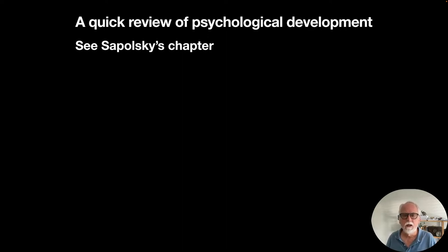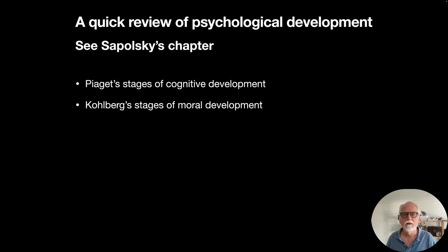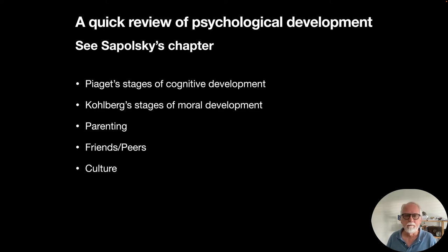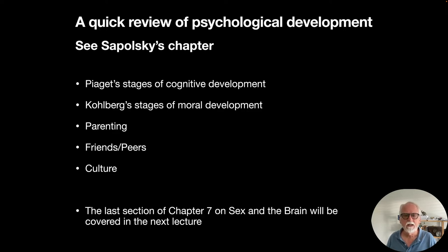Sapolsky's chapter covers Piaget's stages of cognitive development, Kohlberg's stages of moral development, research about parenting and how it might differ by culture, the effects of peers on social development, and culture. All of these are important topics. He also has a section on sex and the brain that I'll be covering in the next lecture.